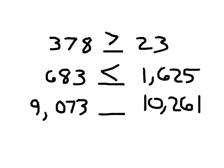Think about that last one for yourself. Think about what it is that we said — what symbol are you going to put in there? Hopefully you put that symbol in there for yourself. Read that whole number sentence back for yourself. 9,073 is less than 10,261.